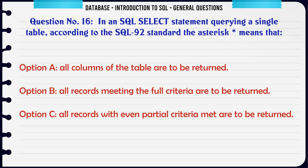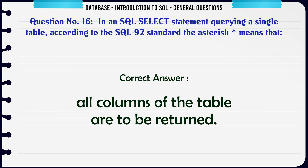In an SQL SELECT statement querying a single table, according to the SQL 92 standard, the asterisk means that: A. All columns of the table are to be returned. B. All records meeting the full criteria are to be returned. C. All records with even partial criteria met are to be returned. D. None of the above is correct. The correct answer is: all columns of the table are to be returned.